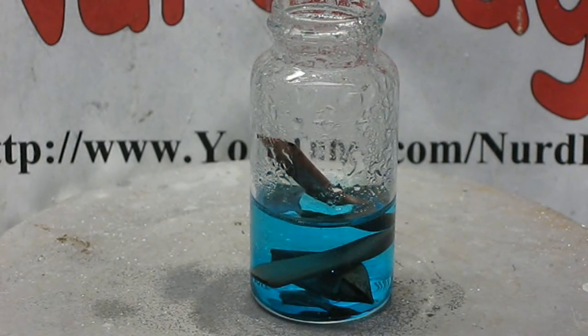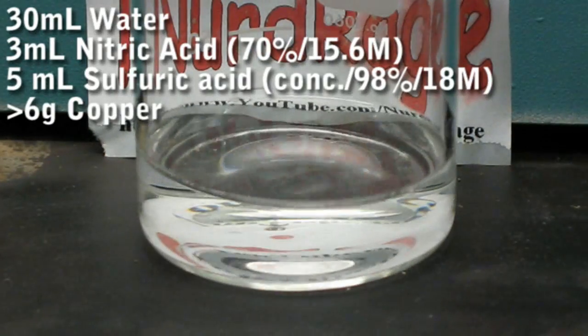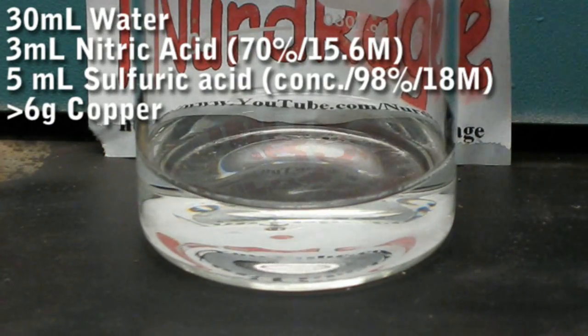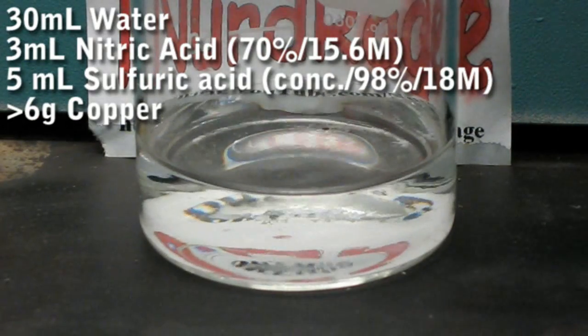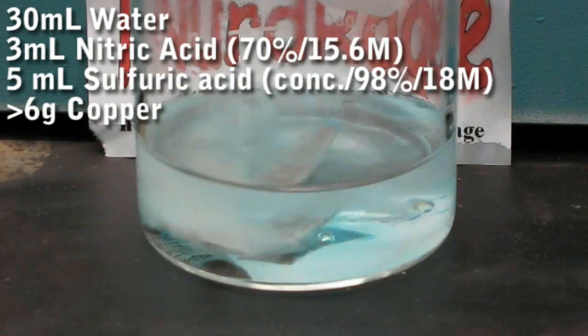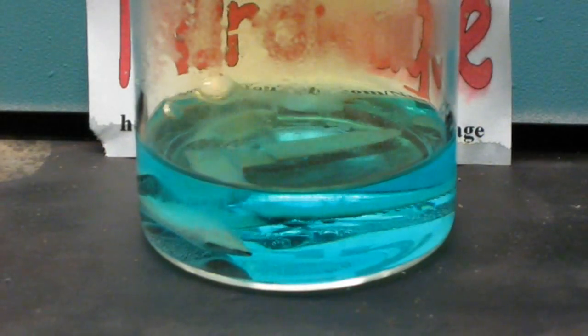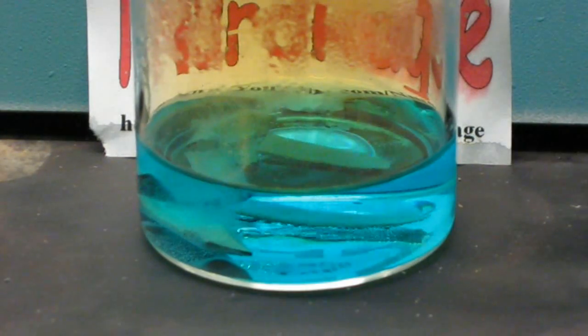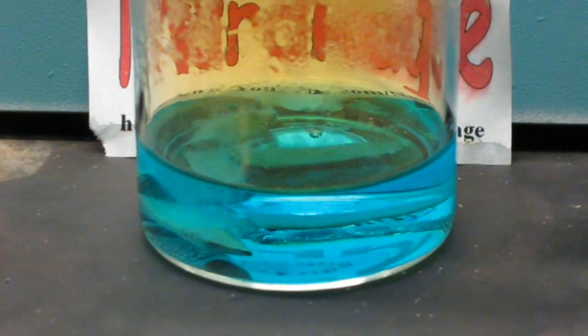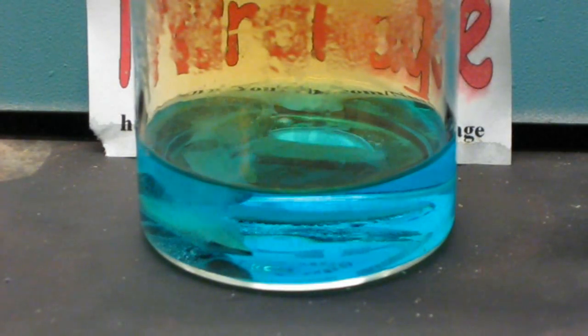A better method is to use nitric acid as your oxidant. First get 30 mL of water and add 3 mL of nitric acid along with 5 mL of sulfuric acid. Then add in 6 grams or so of copper metal. The reaction will produce both copper sulfate and nitrogen dioxide gas. Because the gas is toxic this must be performed outside or in a fume hood. When it stops fizzing it's done.